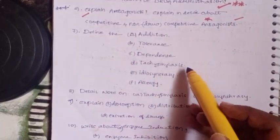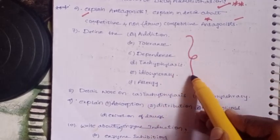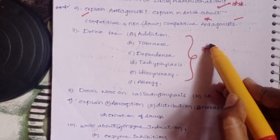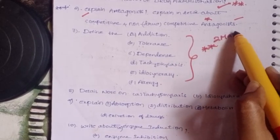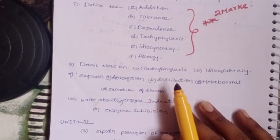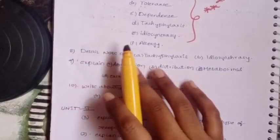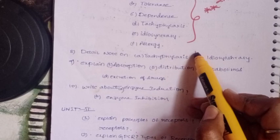Define: Addiction, Tolerance, Dependence, Tachyphylaxis, Idiosyncrasy, and Allergy. Make sure to know all these definitions. These definitions are definitely 2 marks and also very useful for 5 marks.